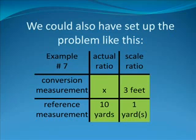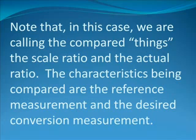Alternately, we could also set up the problem like this. You always have your choice as to whether to use rows or columns for the characteristics compared. Although, in my experience, it seems to work better if the items name the columns and the characteristics name the rows. But either way will work fine. Note that, in this case, we are calling the compared things the scale ratio and the actual ratio. The characteristics being compared are the reference measurement and the desired conversion measurement.